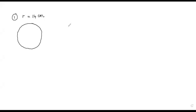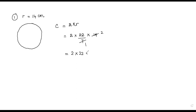They have given the radius value 14 centimeters to find the circumference or the perimeter of this circle. The formula is 2πr, and the π value is 22 over 7. The radius value is 14. You can simplify: 7 cancels with 14 giving 2, then you multiply 2 times 22 times 2. The answer is 88 centimeters. So the circumference of the circle is 88 centimeters.